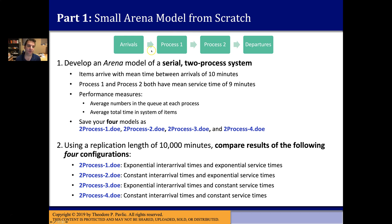You're going to create four different versions of this model, which vary in the distributions used for arrivals and the two processes. What's in common across all four versions is that arrivals are always separated by 10 minutes on average, process one always has an average service time of nine minutes, and process two — independent from process one — also has an average time of nine minutes. You're going to measure the average numbers in the queue at both processes and the average total time in the system.